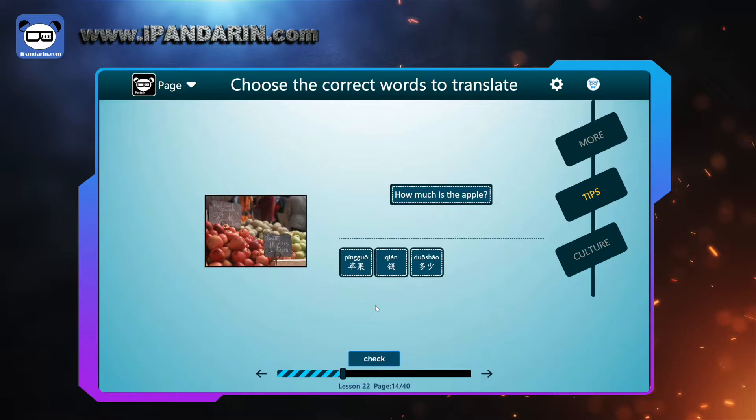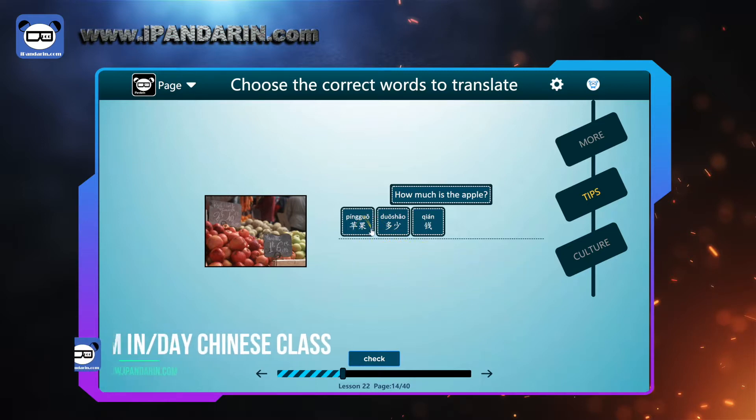Okay, well, after asking the amount, we talk about the price. How much is the apple? 苹果多少钱? We use something, 多少钱 to ask the price. Like 咖啡多少钱? 书多少钱? 衣服多少钱? We can change the subject with many things to ask the price.